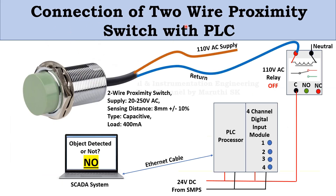Let's understand the connection of a 2-wire Proximity Switch with the PLC. This is the 2-wire Proximity Switch, consisting of a brown wire and a blue wire. The supply can be 220 to 250V AC — in this field we have applied 110V AC. The sensing distance is 8mm plus or minus 10%. The type is Capacitive, and the maximum load that can be connected is 400mA.